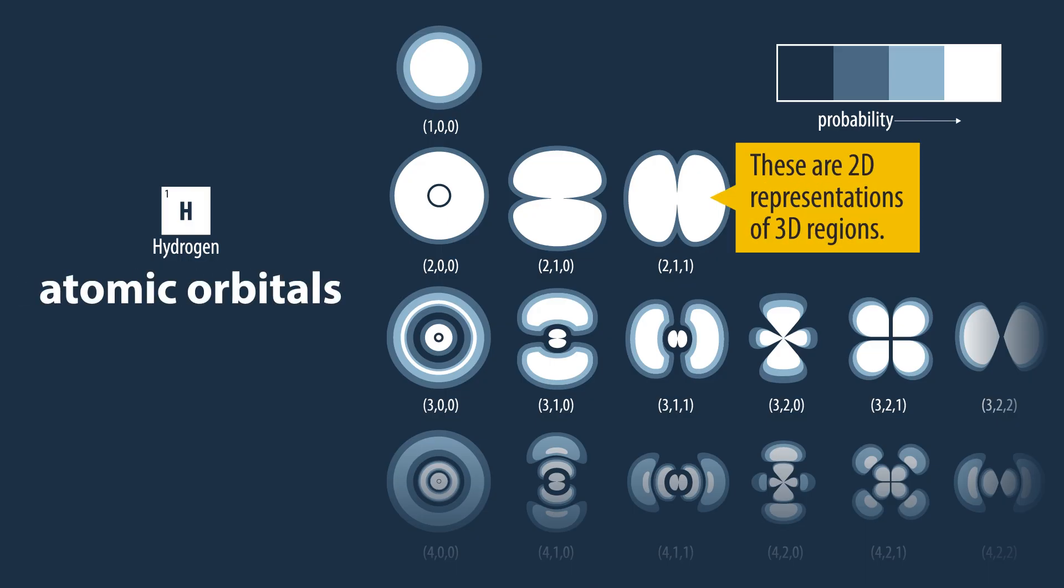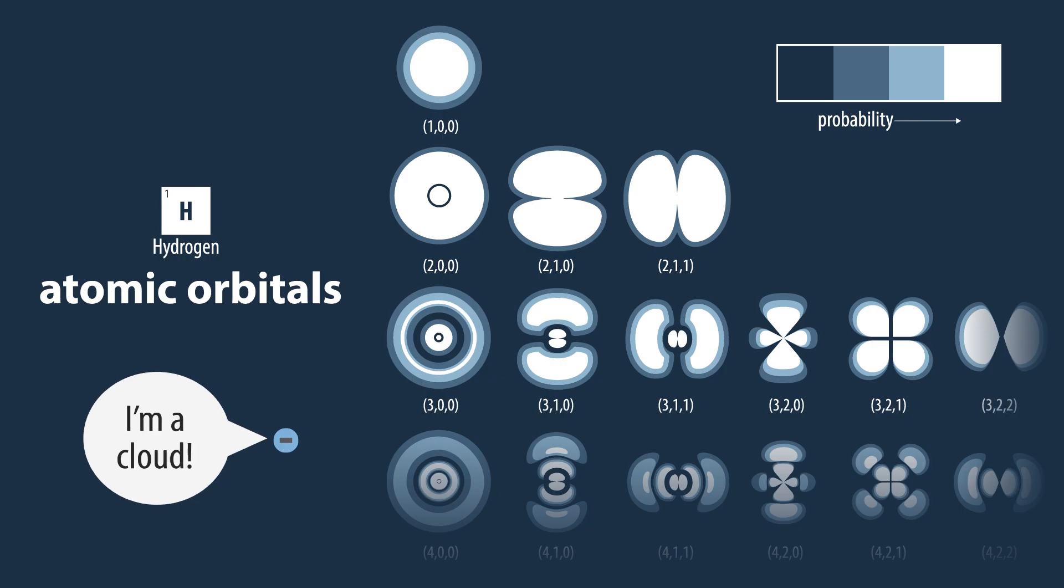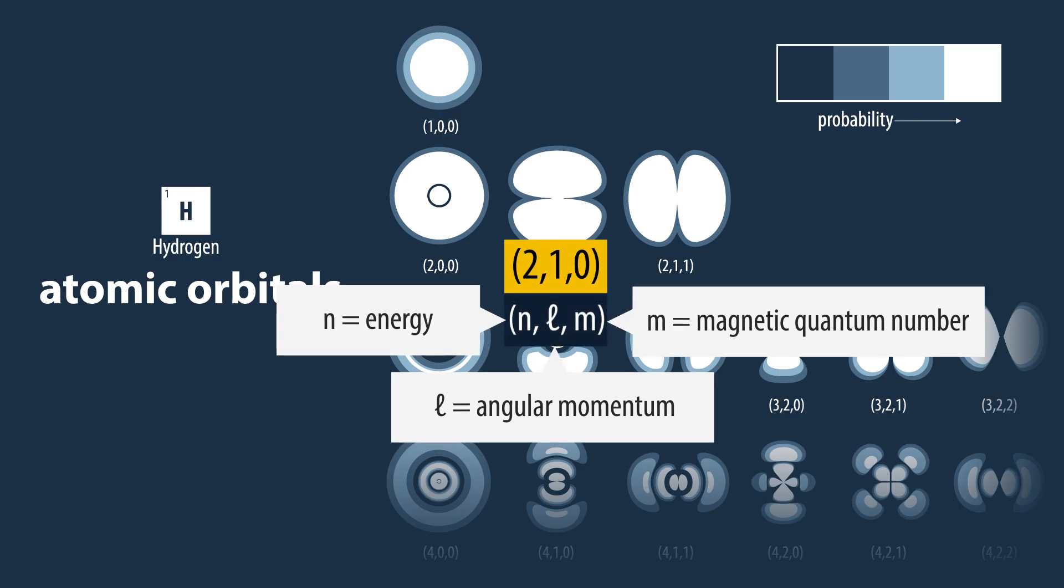Regions of space around the nucleus with different probabilities of finding an electron. Where these zones are depends on the electrons' three quantum numbers, one of which we mentioned before: energy.